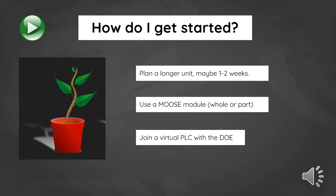Maybe you're ready for something a little bit more — not ready to go fully in yet, but ready to plan something a bit longer, like one to two weeks. Another thing to do is look at a MOOSE module and use either all of it or part of it. These are usually designed to be three to six weeks long and all the materials are included — there are over 400 modules at this point, so there might be something for what you're looking for. Another thing to consider is joining a virtual PLC with us at the DOE. We've got many opportunities coming up, so please check our professional development page for more information.